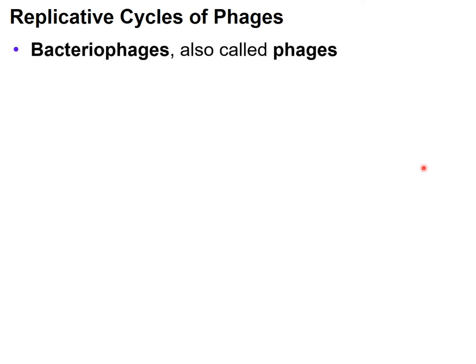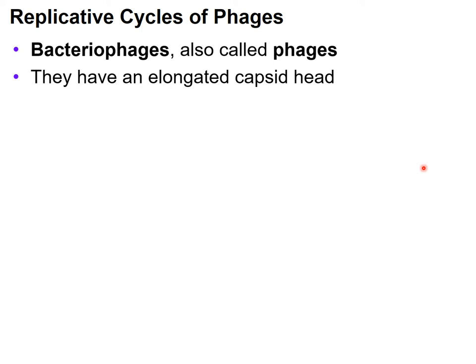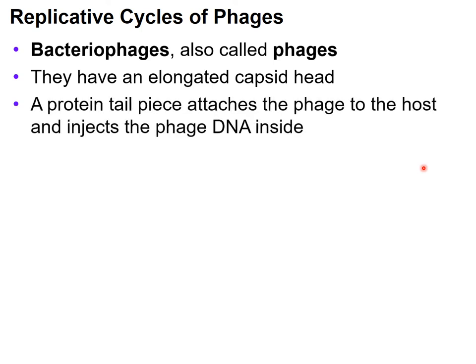Now let's talk about phages. A bacteriophage, also called just a phage, has an elongated capsid head which contains the genome, a neck-like structure, and a tail. The tail piece has fibers that attach the phage to the host cell, and it allows the injection of DNA from the capsid head into the host cell.